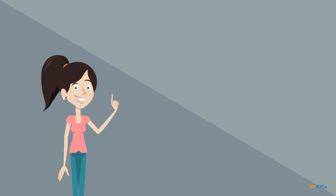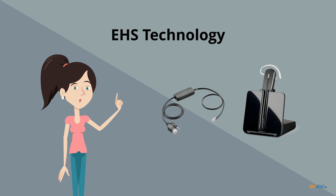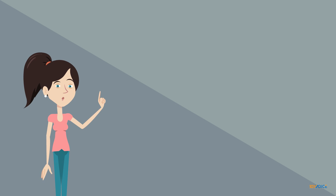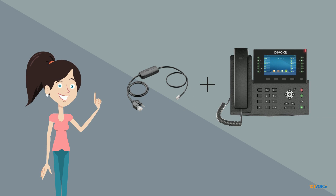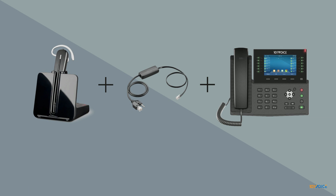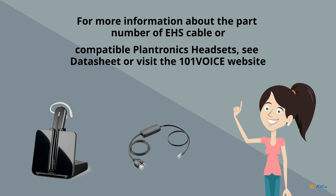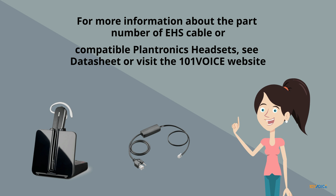Your IP982G phone supports electronic hook switch, or EHS, technology, meaning you can equip your new phone with an optional wireless headset without any mechanical handset lifter. You can also use any compatible wired or wireless headset without an EHS cable by simply pressing the headset button to dial or answer calls. If you wish to use the EHS feature, first plug the EHS cable into the headset connector under the phone, then attach the other end to any compatible wireless headset. Now it's ready to use — just press the button on the headset to make or answer a call. For more information about EHS cable part numbers or compatible headsets, see the datasheets or the 101 Voice website.